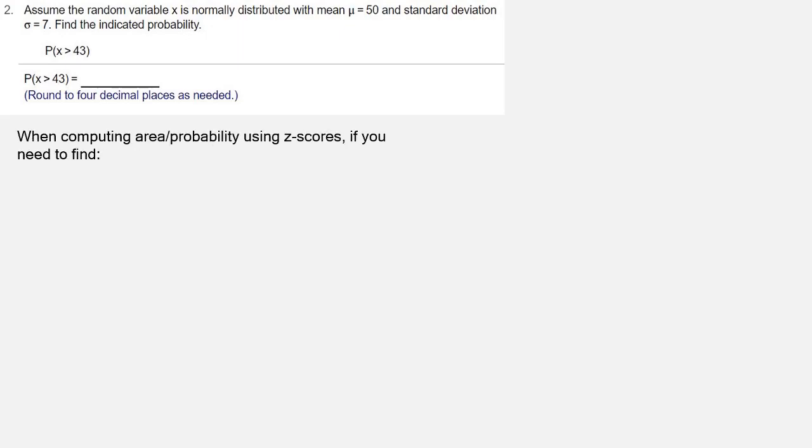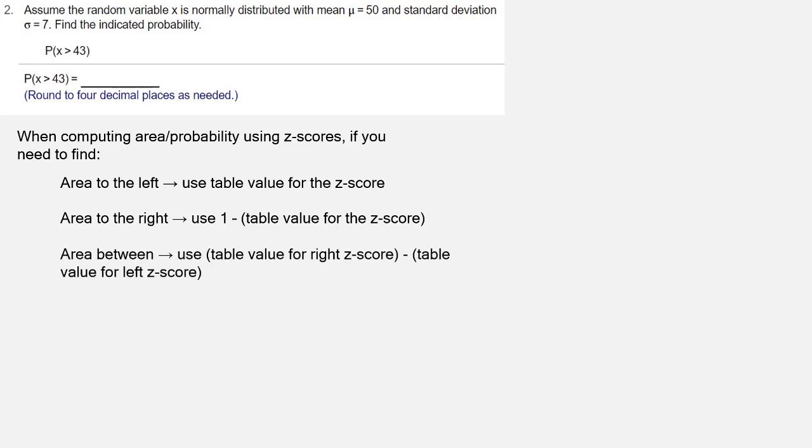When computing area or probability using z-scores, if you need to find area to the left, the table value is your area. If you're finding area to the right, use 1 minus the table value for the z-score. If you're finding the area between two z-scores, use the table value for the right z-score minus the table value for the left z-score.